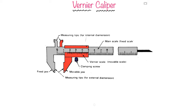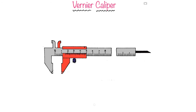Vernier calipers consist of two scales: the main scale and the vernier scale. The main scale is the fixed scale, whereas the vernier scale moves on the main scale. The main scale has two measuring tips — one for internal measurements and one for external measurements. The vernier scale also has two measuring tips, one for internal and one for external measurement. There is a clamping screw to position the vernier scale at a certain position after taking measurements.